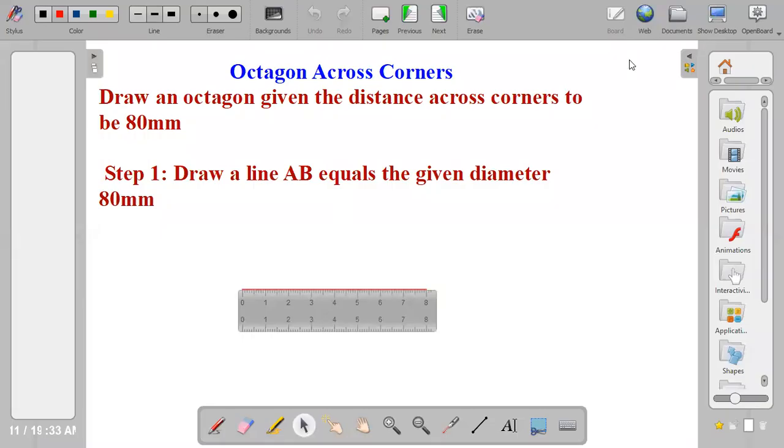Hi guys, welcome to my channel on TD Make Easy. Today I'm going to put you through how to draw octagon across corners. So the first example is to draw an octagon given the distance across corners to be 80mm.